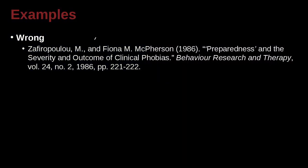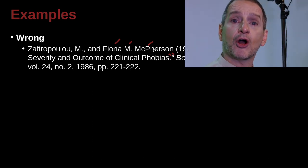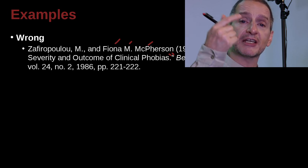That's for Polly M. and Fiona M. McPherson — so first name, middle name, last name. Remember the second author is written out normally; you don't reverse it. The article title is 'Preparedness in the Severity and Outcome of Clinical Phobia,' and you can see that inside this article they have single quotation marks — that's okay, that's all inside double quotation marks. The double quotation marks tell us that this is an article inside a journal: something smaller inside a container that's larger.